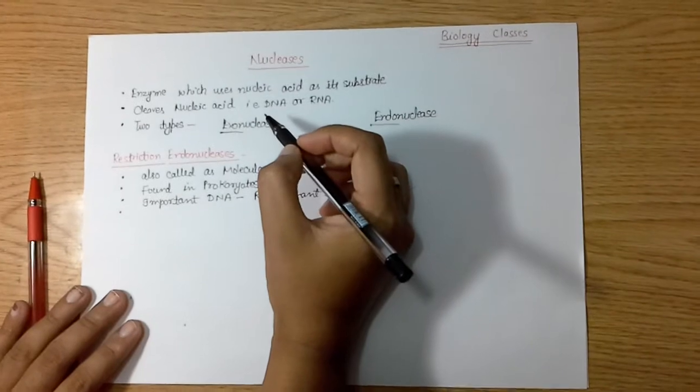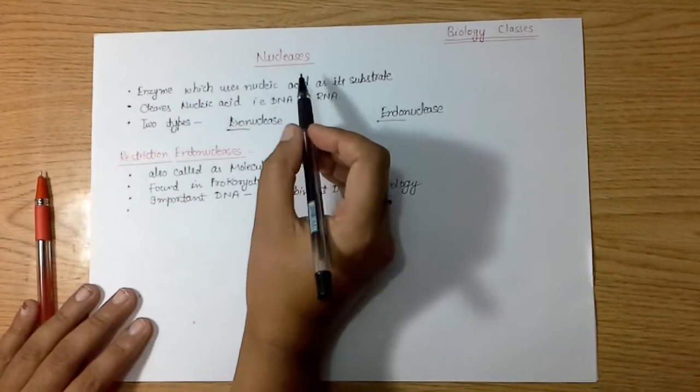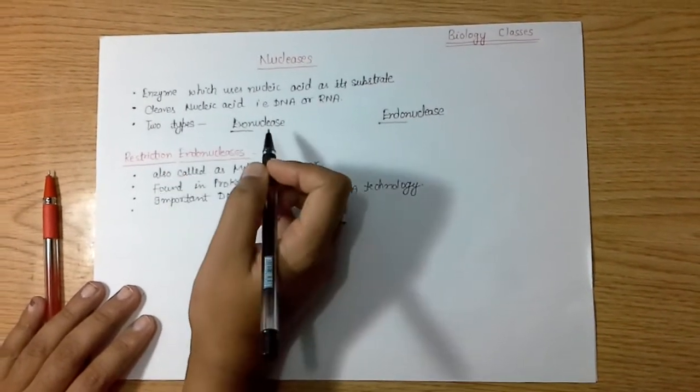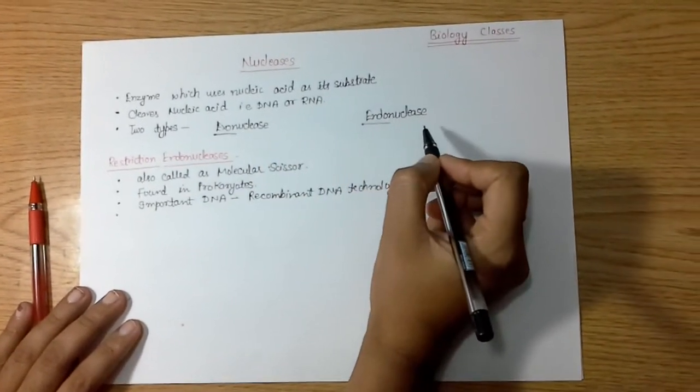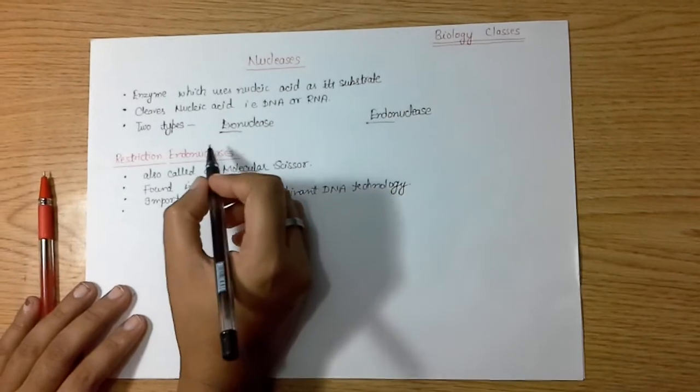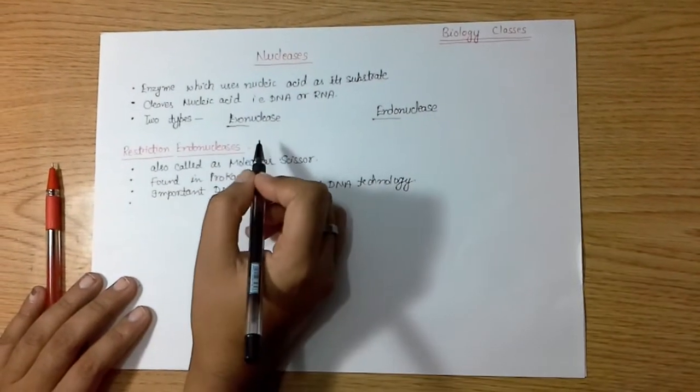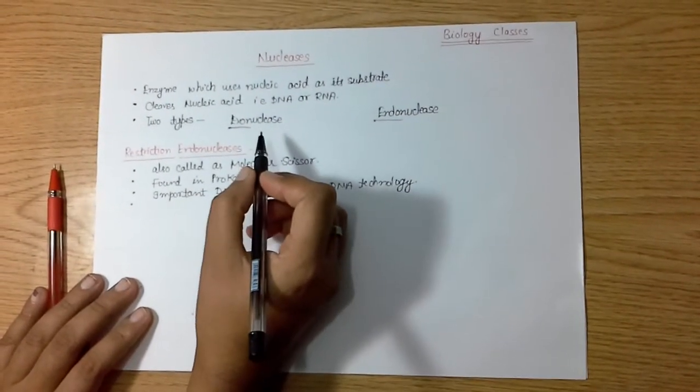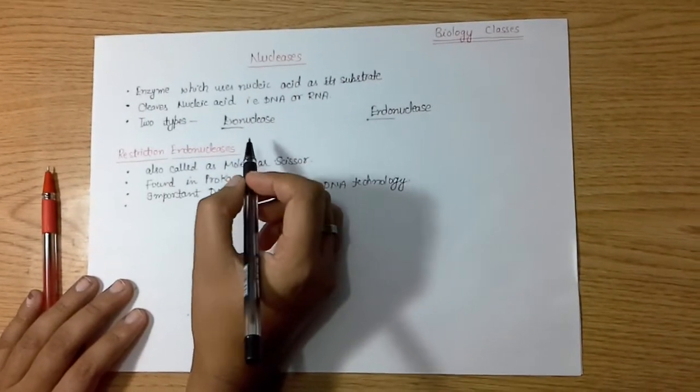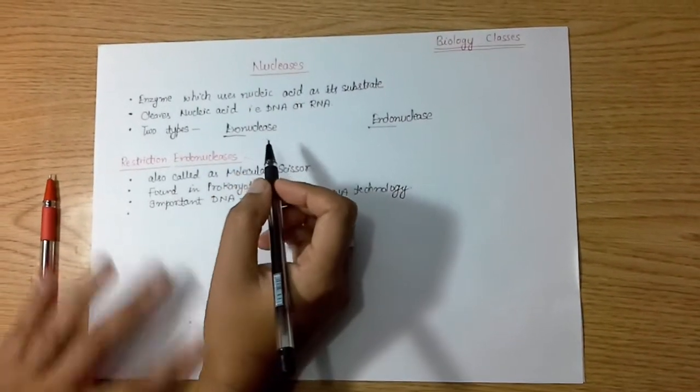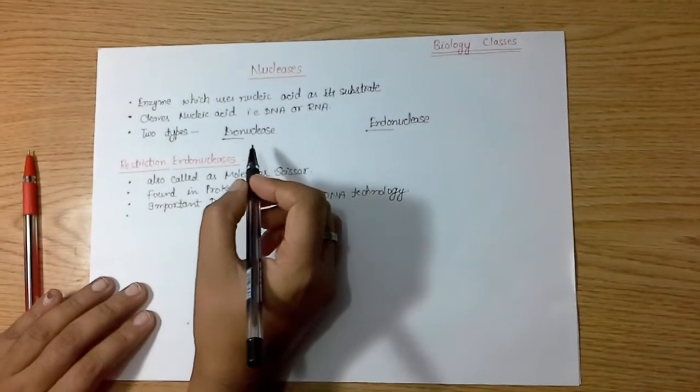Nucleases are further divided into two types, which we can name exonucleases and endonucleases. Exonucleases are a group of enzymes which are specialized, or we can say specific, for cleaving the terminal ends of DNA.